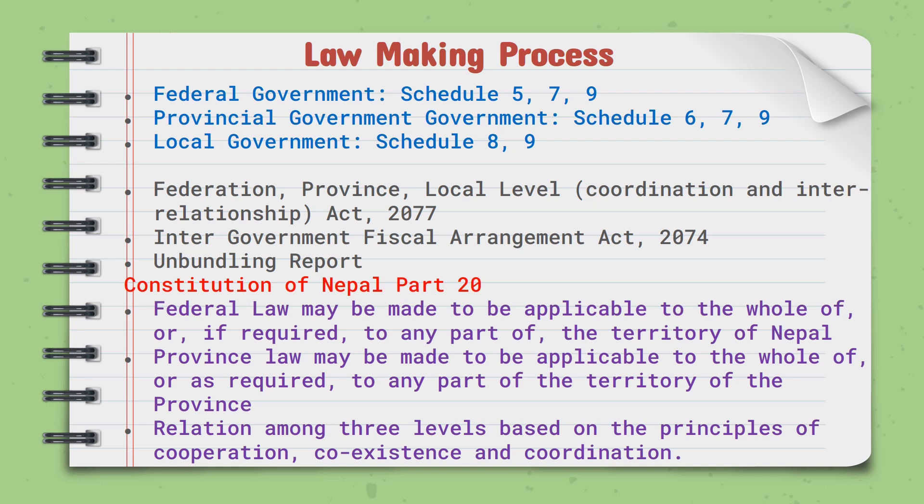Our constitution in Part 20 states that federal law may be applicable to the whole of, or if required, to any part of the territory of Nepal. Province law may be made to be applicable to the whole of, or as required, to any part of the territory of the province. Relations among the three levels are based on the principles of coordination, coexistence, and cooperation.